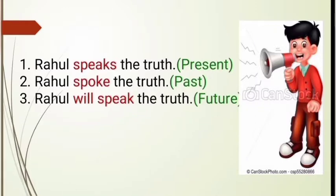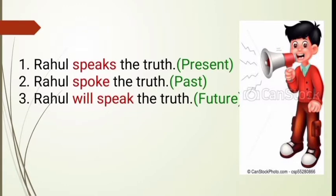Look at the three sentences displayed on the screen. First: Rahul speaks the truth. Next: Rahul spoke the truth. And the third: Rahul will speak the truth. All three sentences contain one single verb but different tenses. 'Rahul speaks the truth' indicates present tense, which means the action is presently happening. 'Rahul spoke the truth' represents past tense, meaning the action has already taken place. And 'Rahul will speak the truth' represents future tense, meaning the action will happen in the coming time.